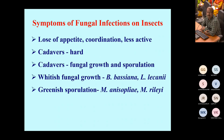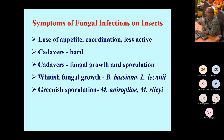Major symptoms of fungal infection include loss of appetite, poor coordination, and reduced activity of the insects. The insect cadaver looks hard. The difference between fungal and bacterial infection is that a fungally infected insect will look hard in structure, whereas bacteria-infected insects will be very soft. The whitish fungal growth is mainly due to Beauveria bassiana and Lecanicillium, while greenish growth is from Metarhizium.